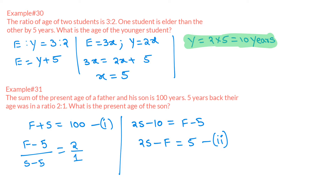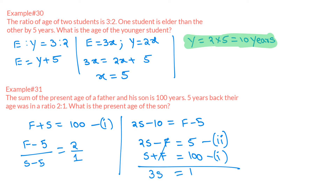Writing Expression 1 as S + F = 100 and adding it to Expression 2 (2S − F = 5), we get 3S = 105, so S = 105 / 3 = 35 years. The present age of the son is 35 years.